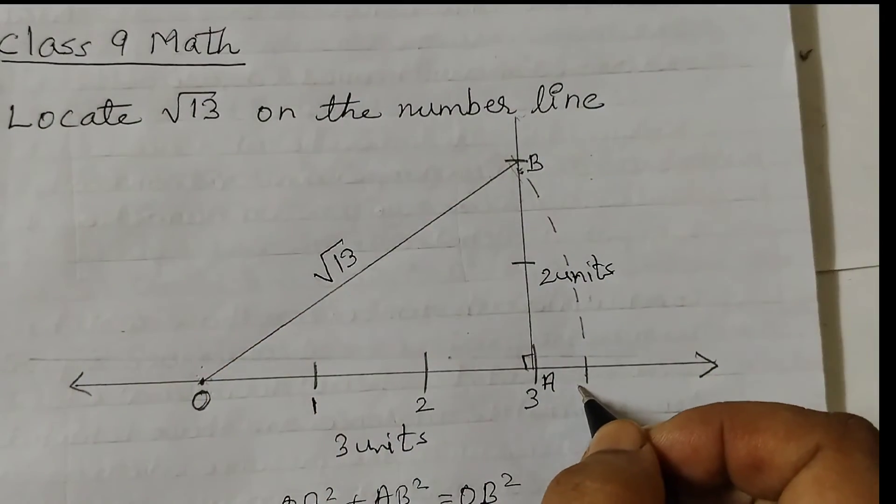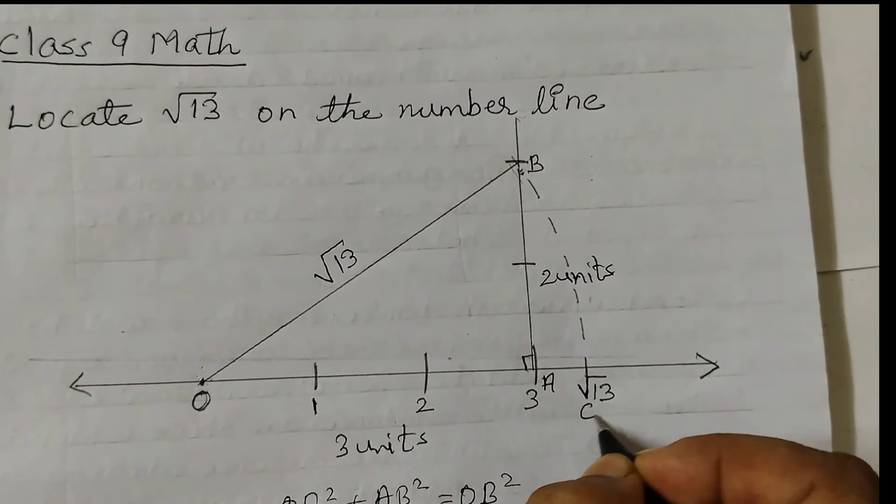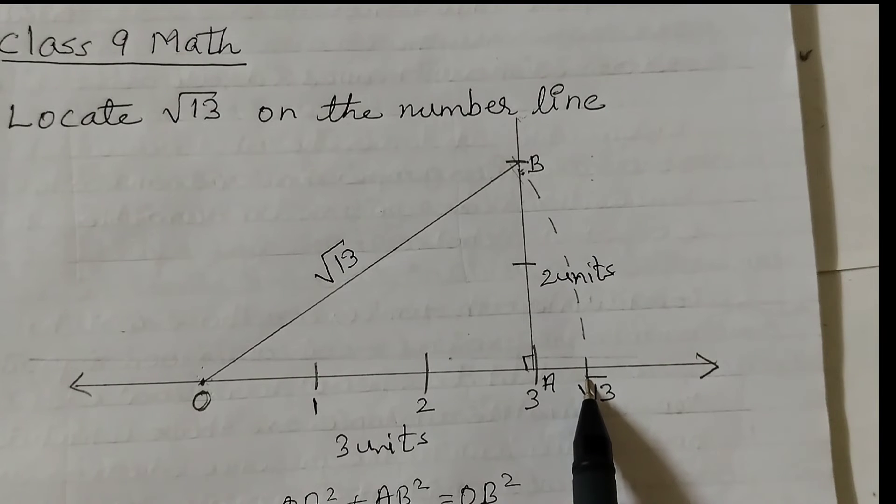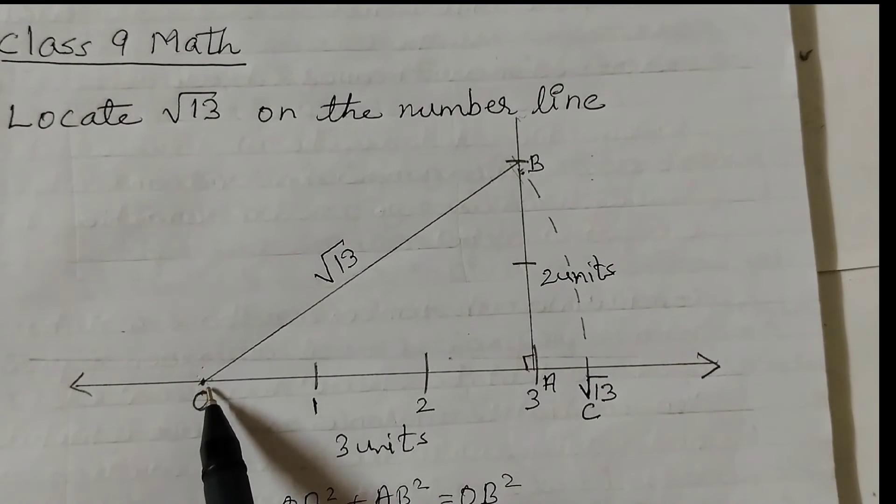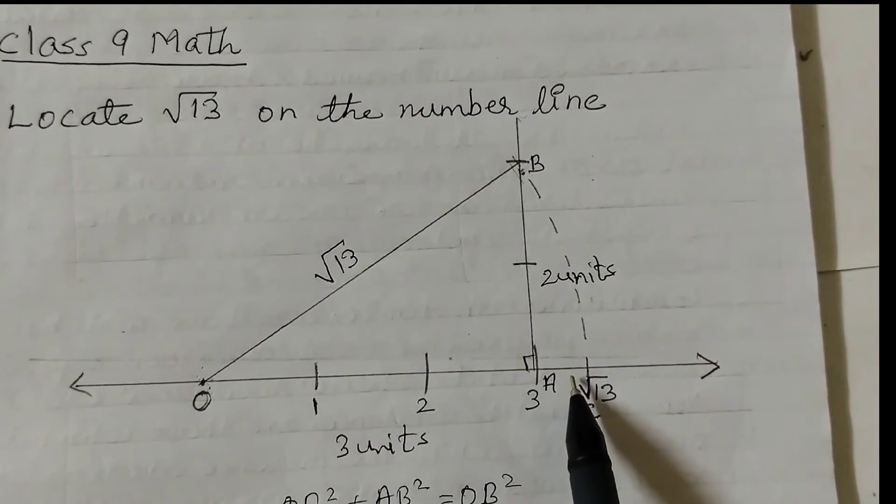So this is square root of 13. Let's say this is C. OC, this length, is square root of 13 because we have taken OB as the radius and cut an arc here. So this length is also square root of 13.